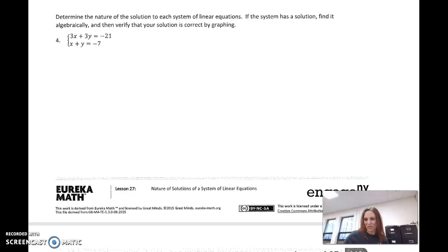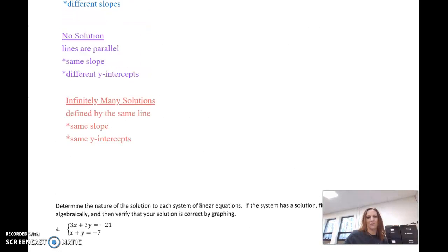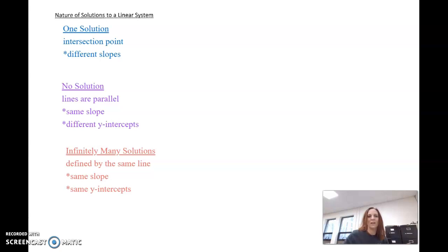And we had just finished up in our last video writing these things down. Different slopes, automatically, you've got a solution. There is an x and y value that make it true. If you get the same slope, you've got two choices here, and it's going to depend on the y-intercepts.